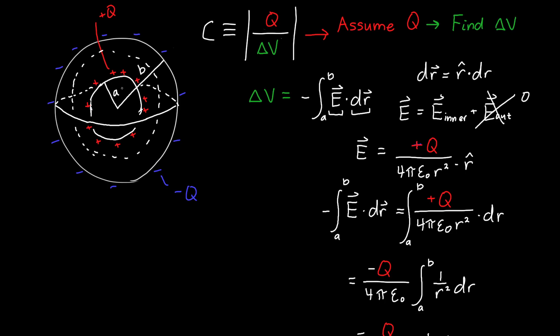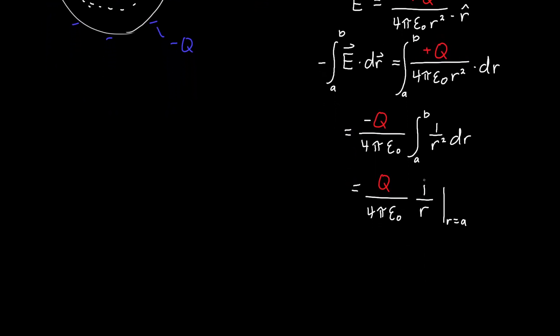We need to plug in R equals A, because we're starting our integral at the surface of our inner charge, and we're ending at our outer charge, because we want to find the potential difference between these two plates.